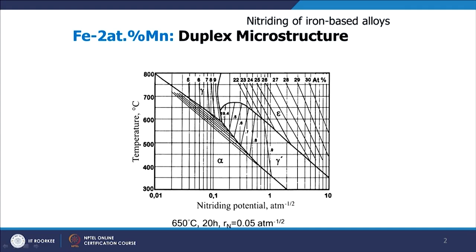In the last lecture, we discussed the influence of different alloying elements added into the steel and how they influence the growth of iron nitride layers. We discussed carrying nitriding experiments in the relevant region of the phase diagram, where either gamma prime or epsilon iron nitride can develop, staying below 592 degrees Celsius — the eutectoid temperature of the iron-nitrogen system — so that we are not allowing any austenite to nucleate.